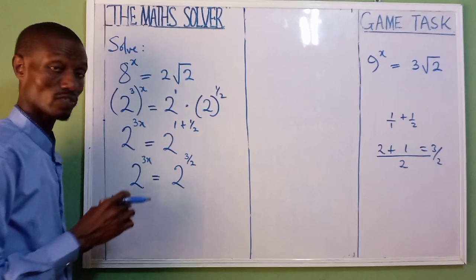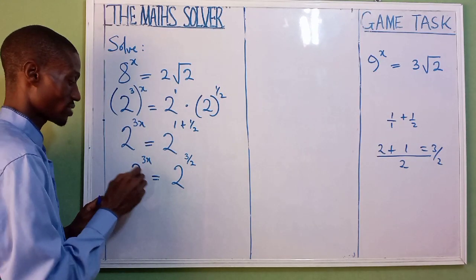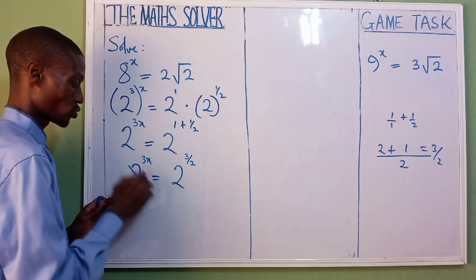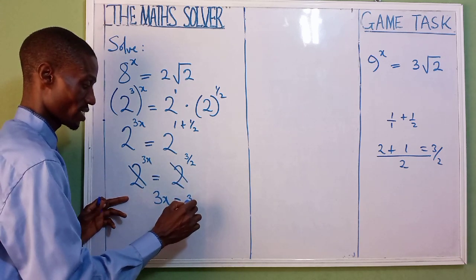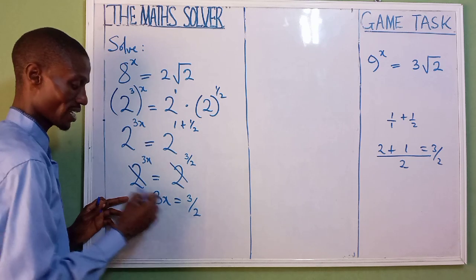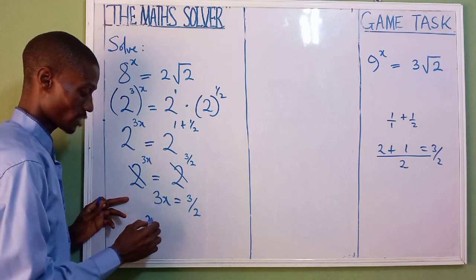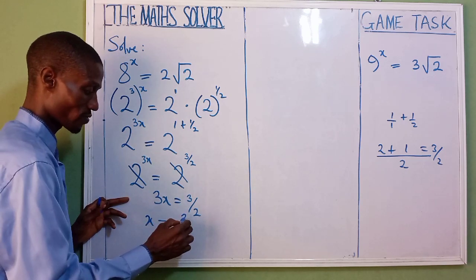Very good. We have 3 over 2. The next we are going to do is, we now have the same base. 2 cancel 2. So you have 3x equal to 3 over 2. I want our x. That's what we want.